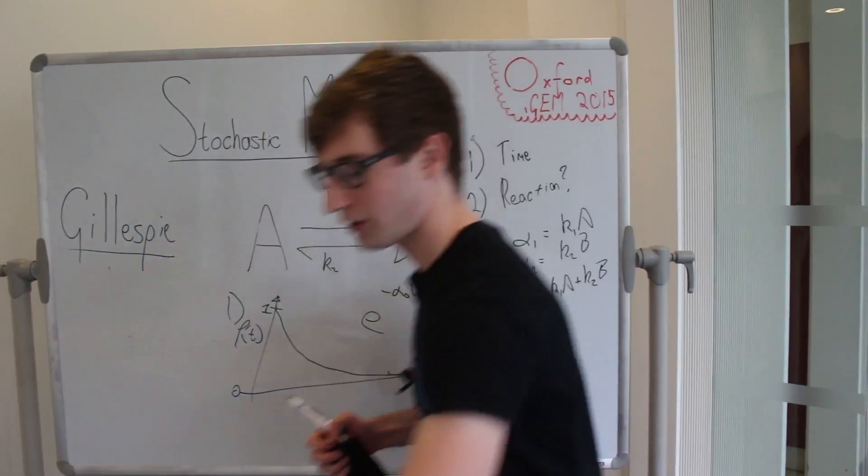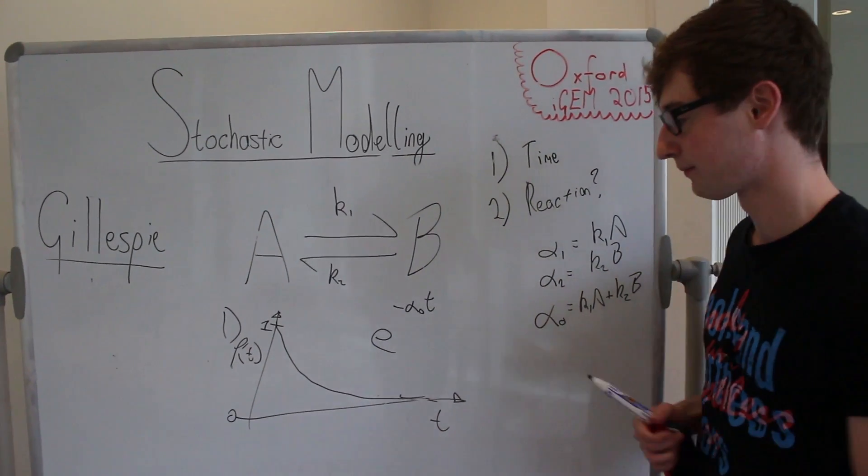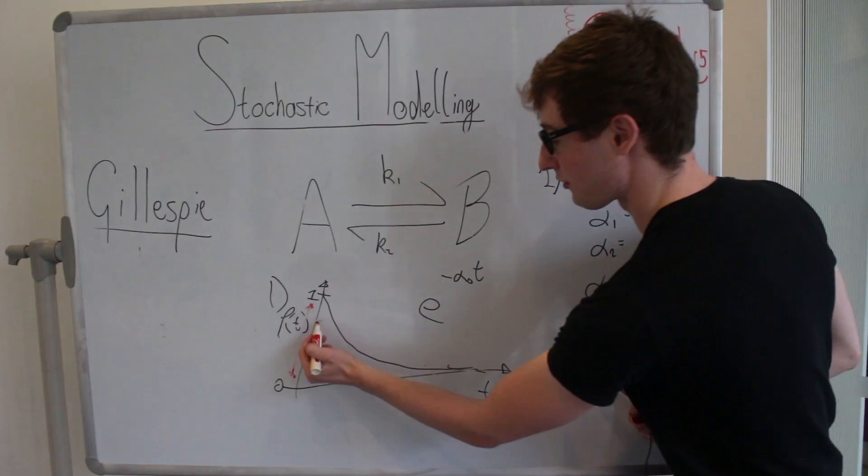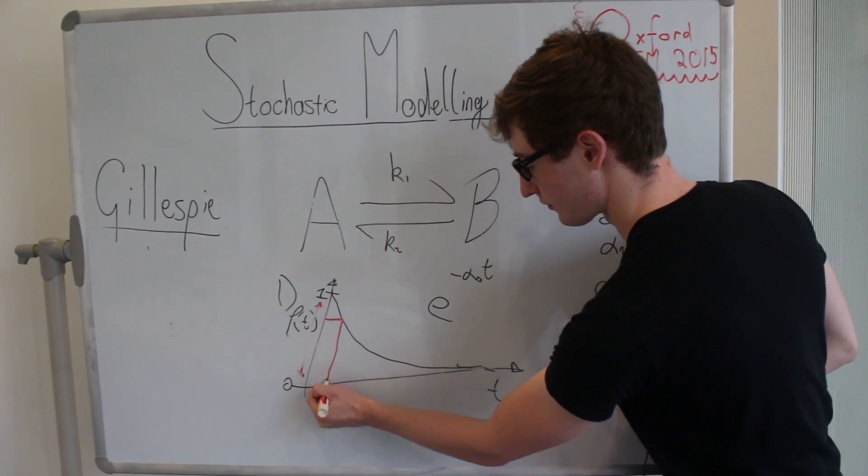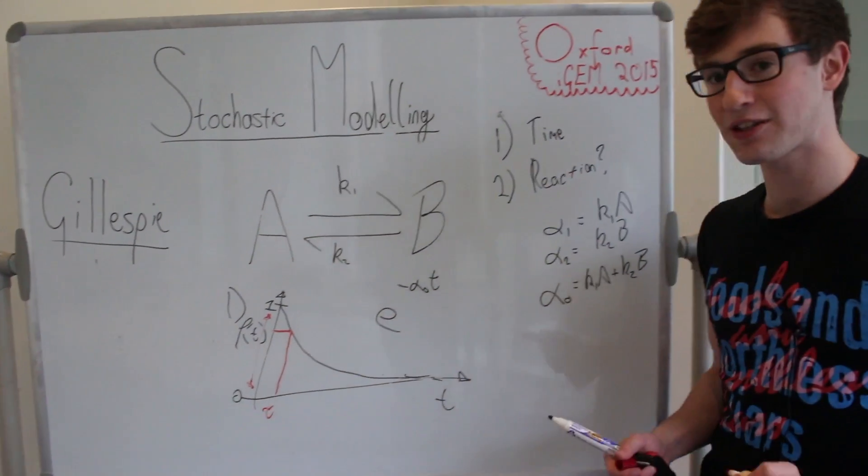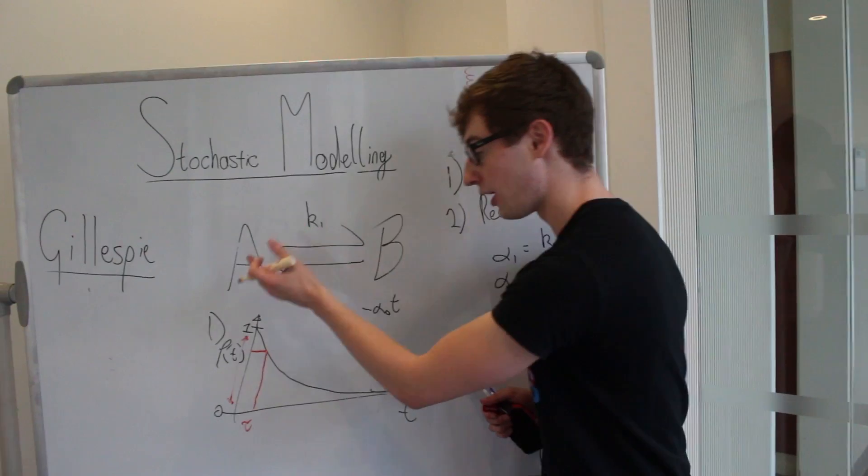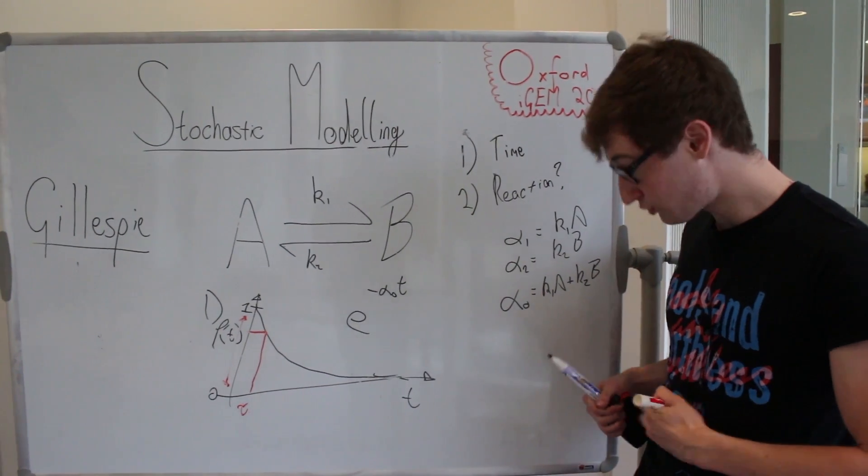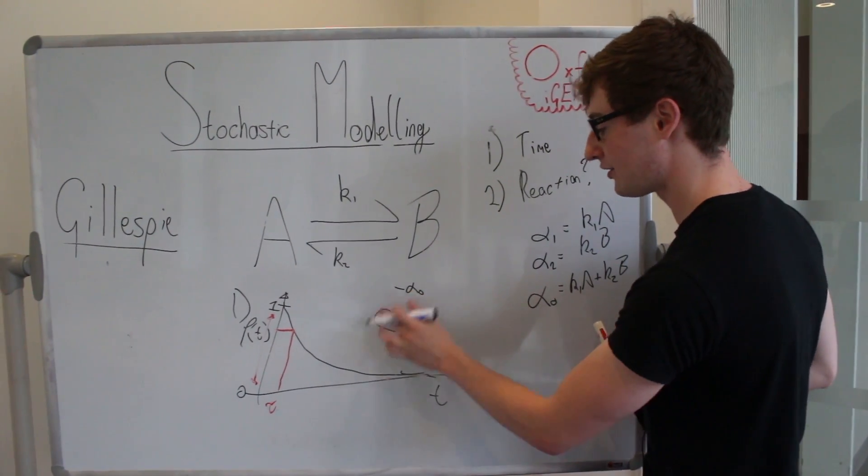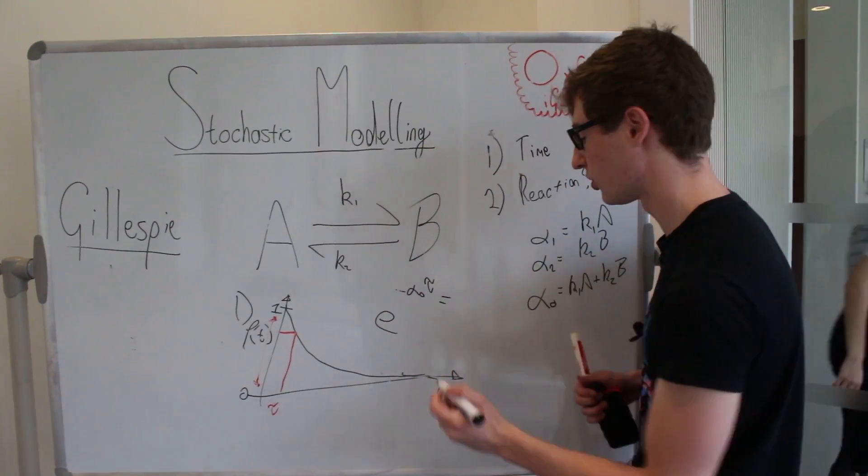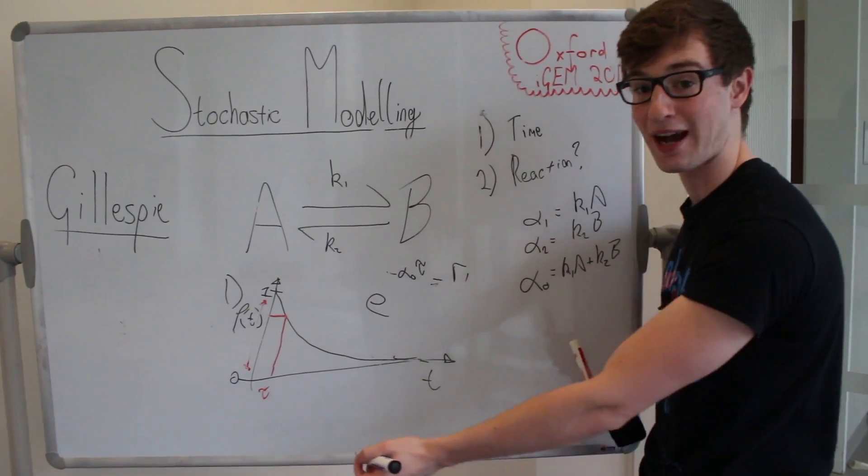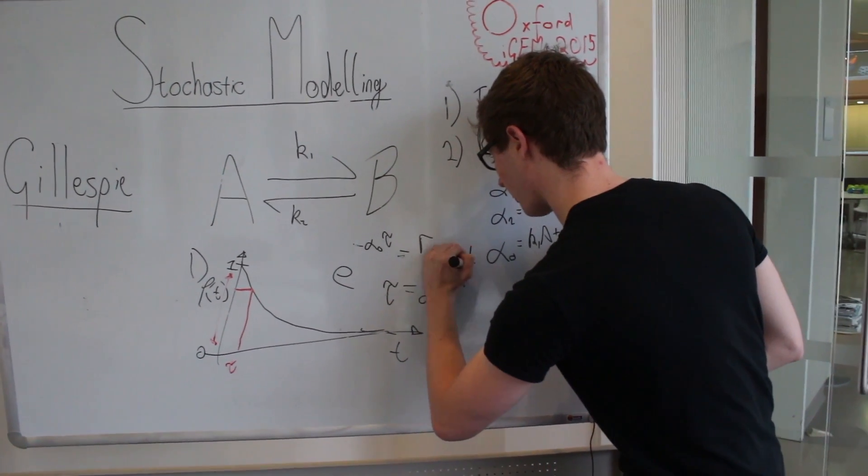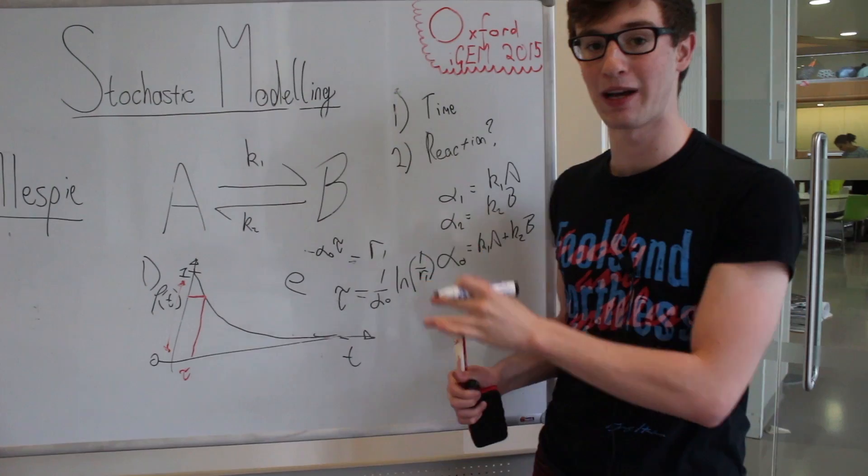And what we're going to do is we're going to randomly pick a number between naught and one. Say it lies here. We're going to put the number in this range and we're going to read off our graph where this intercepts. And we're going to call this time tau, the time we had to wait until the next reaction occurs. So what we've done is we've randomly sampled from a probability distribution equation to get the time that we wanted. And in fact we can rearrange this equation where we're now writing e to the minus alpha naught times tau equals our random number which I will call R1. We can rearrange to find the time tau that we need and get that tau equals 1 over alpha naught times the natural log of 1 over R1. And now we have the time we wait until the next reaction.